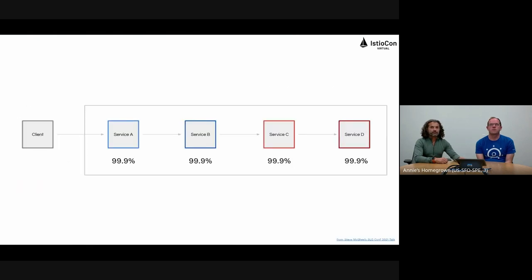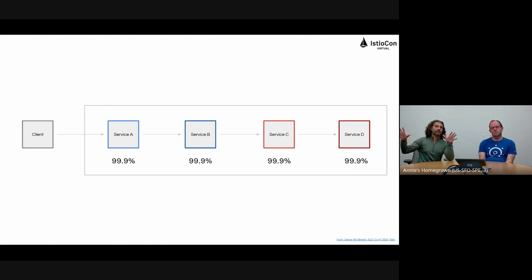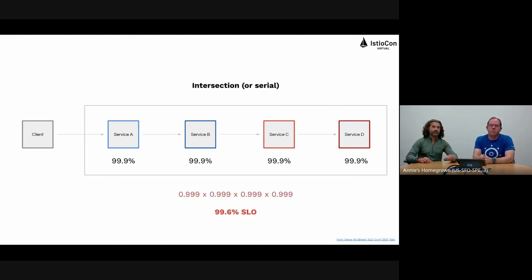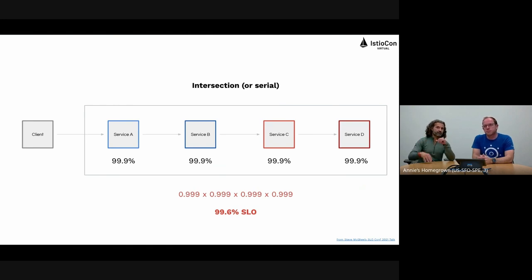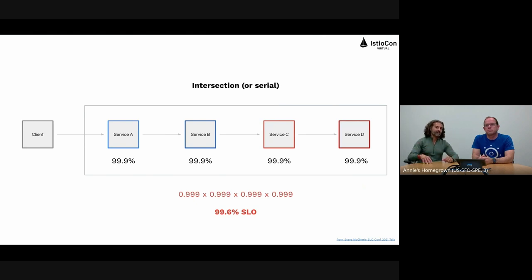There are two ways to measure SLOs. The first is aggregate SLOs. Imagine a system where a client talks to service A, which talks to B, C, and D — a typical microservices chain. Every service must be up for the life of the request. The numbers are made up, but imagine these are availability SLOs for individual services, all at three nines. To calculate the aggregate SLO, you simply multiply them together. Intuitively you'd think the aggregate is also three nines, but that's not the case — multiply them together and your SLO goes down. You end up at 99.6%. The direction matters more than the exact numbers: when things are connected in serial, the overall SLO drops.